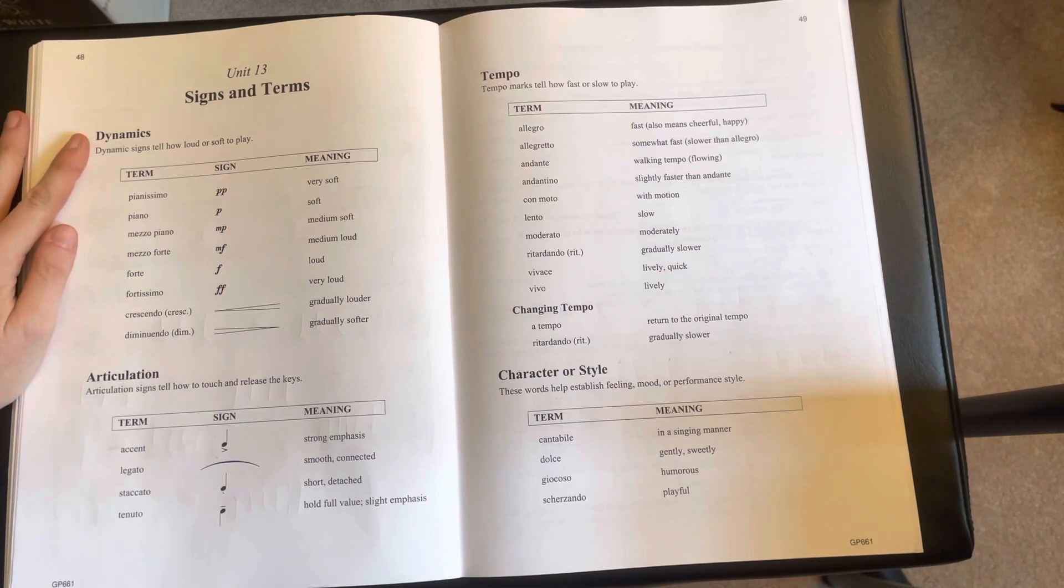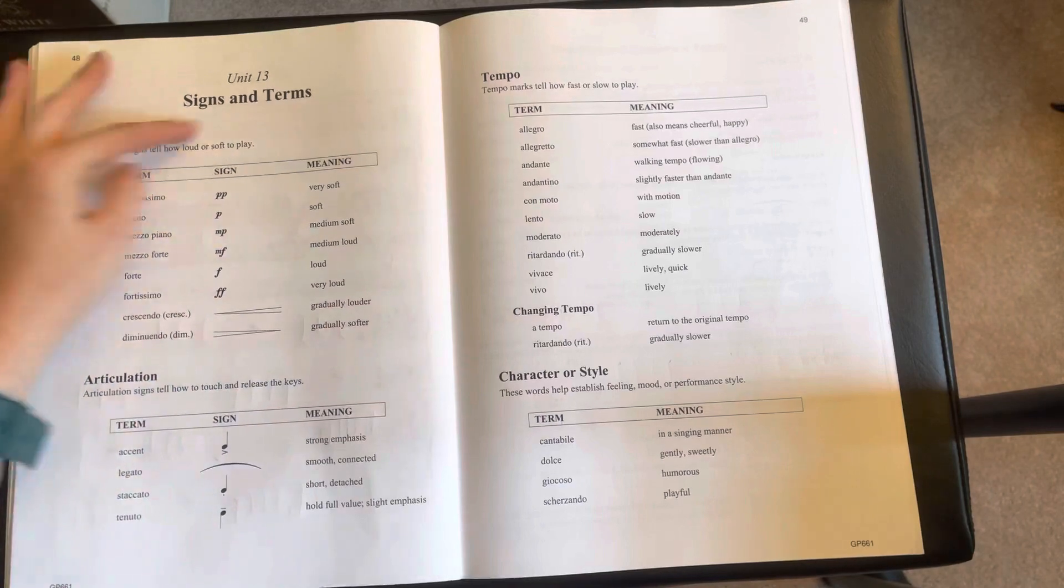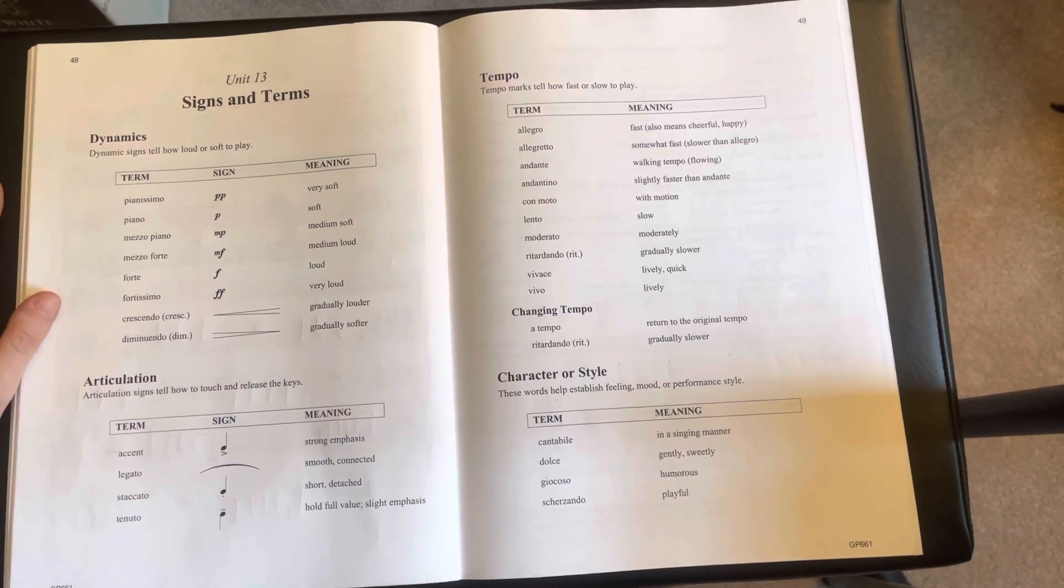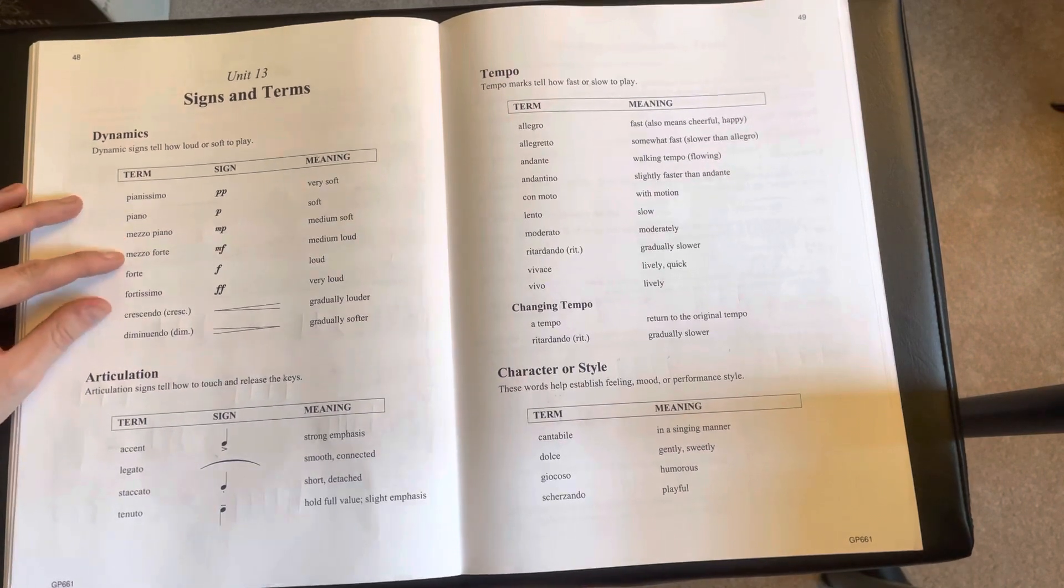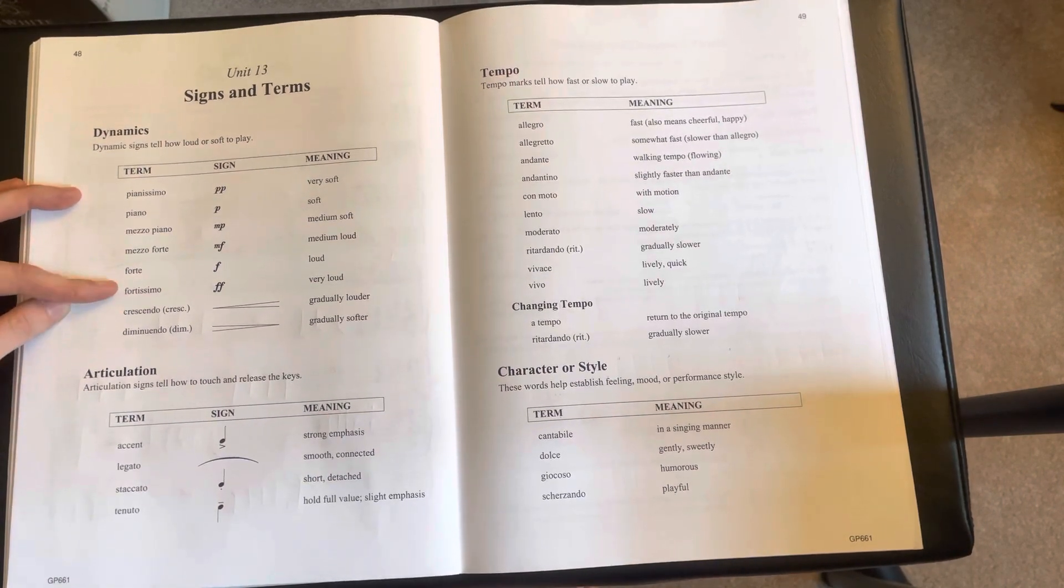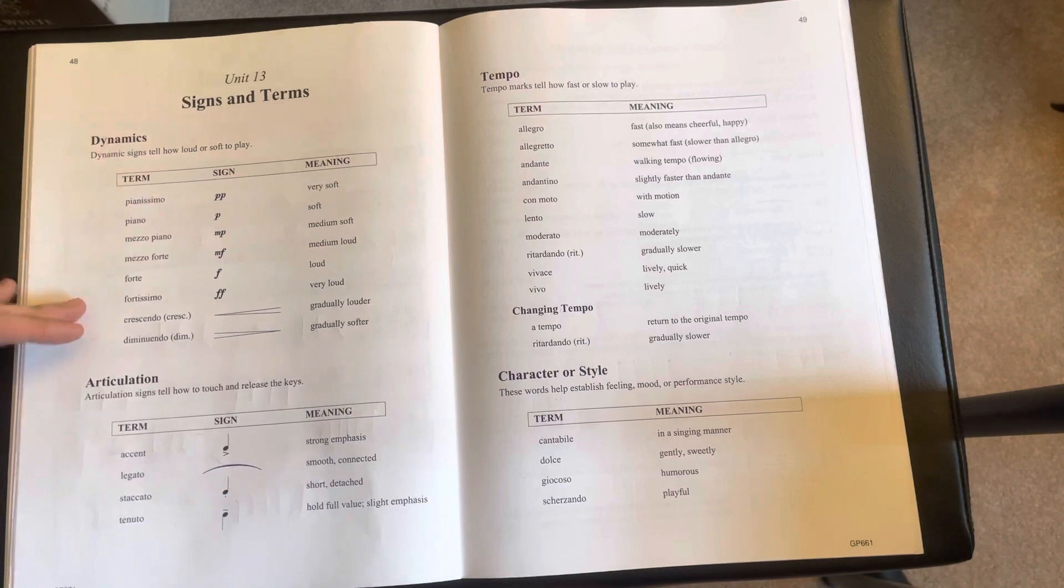So our dynamics, this is the section on all of our volume dynamics. It means the volume, how loud or how soft you're playing. So we have pianissimo, piano, mezzo piano, mezzo forte, forte, and fortissimo, and that's going from very soft to very loud.